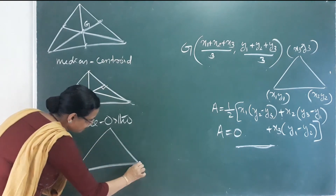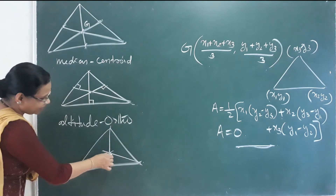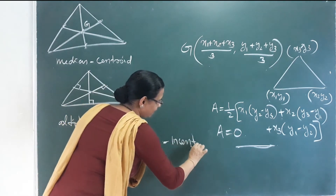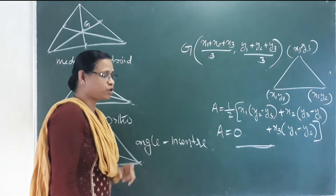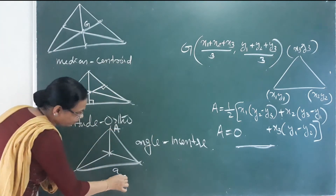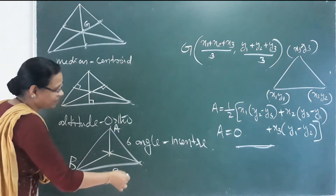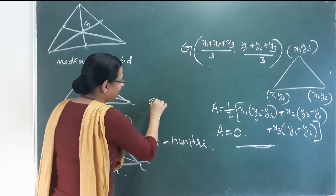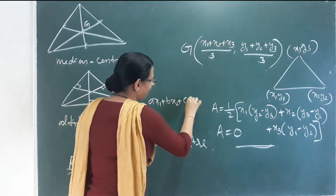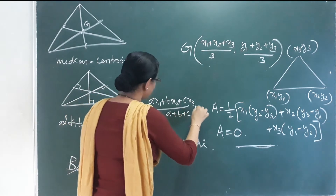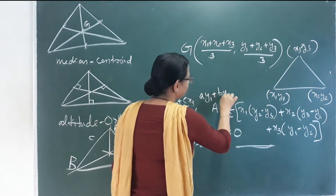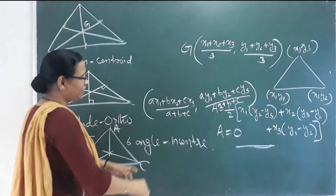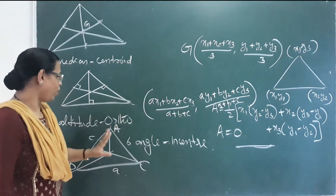The angle bisectors' point of concurrency is called the In-Center. In this chapter, the In-Center formula uses the triangle sides: if a, b, c are the side lengths opposite vertices A, B, C, then In-Center = ((a·x1 + b·x2 + c·x3) / (a+b+c), (a·y1 + b·y2 + c·y3) / (a+b+c)).